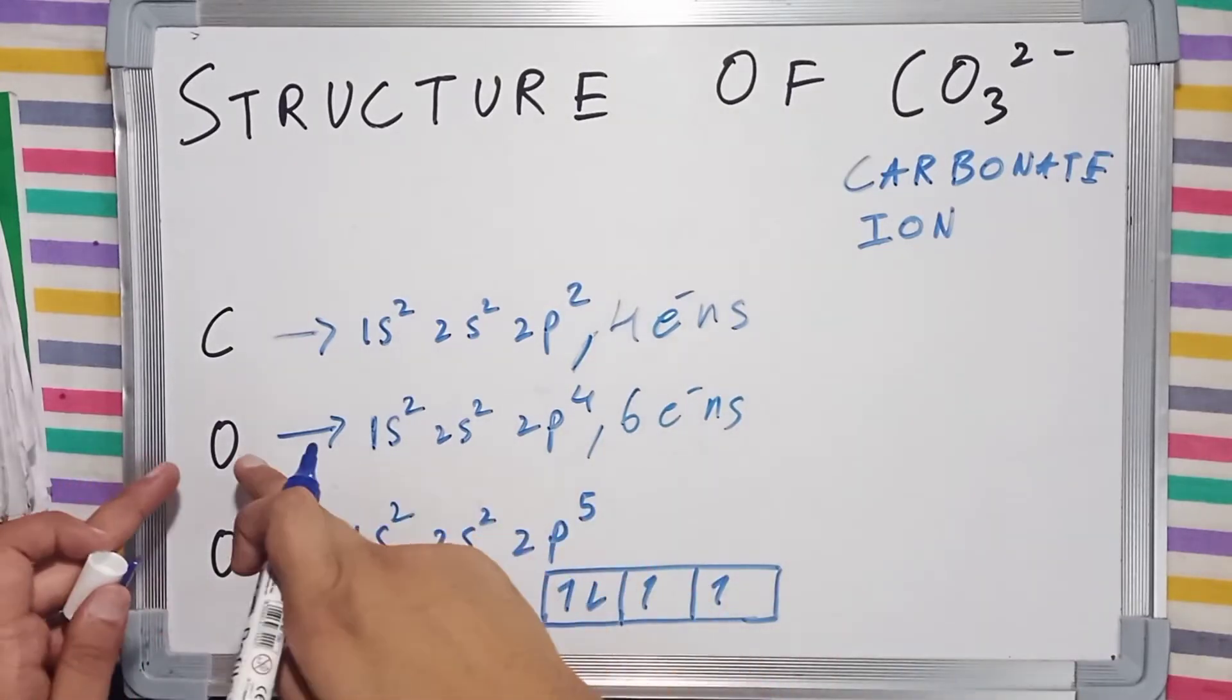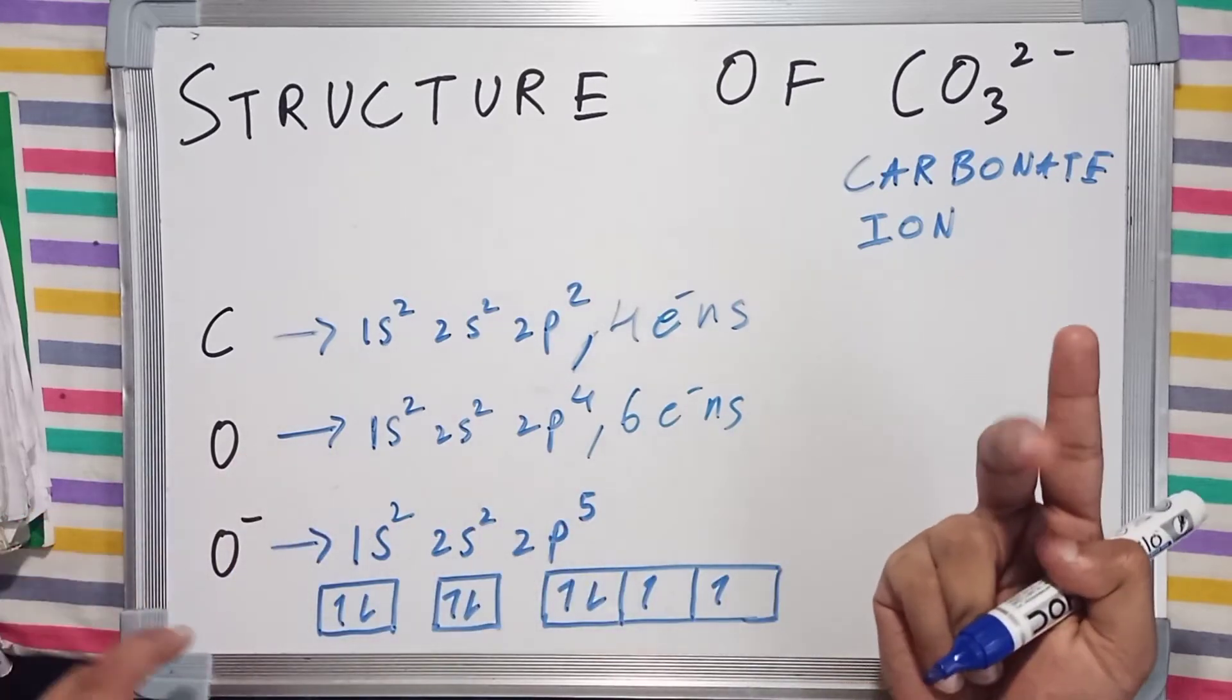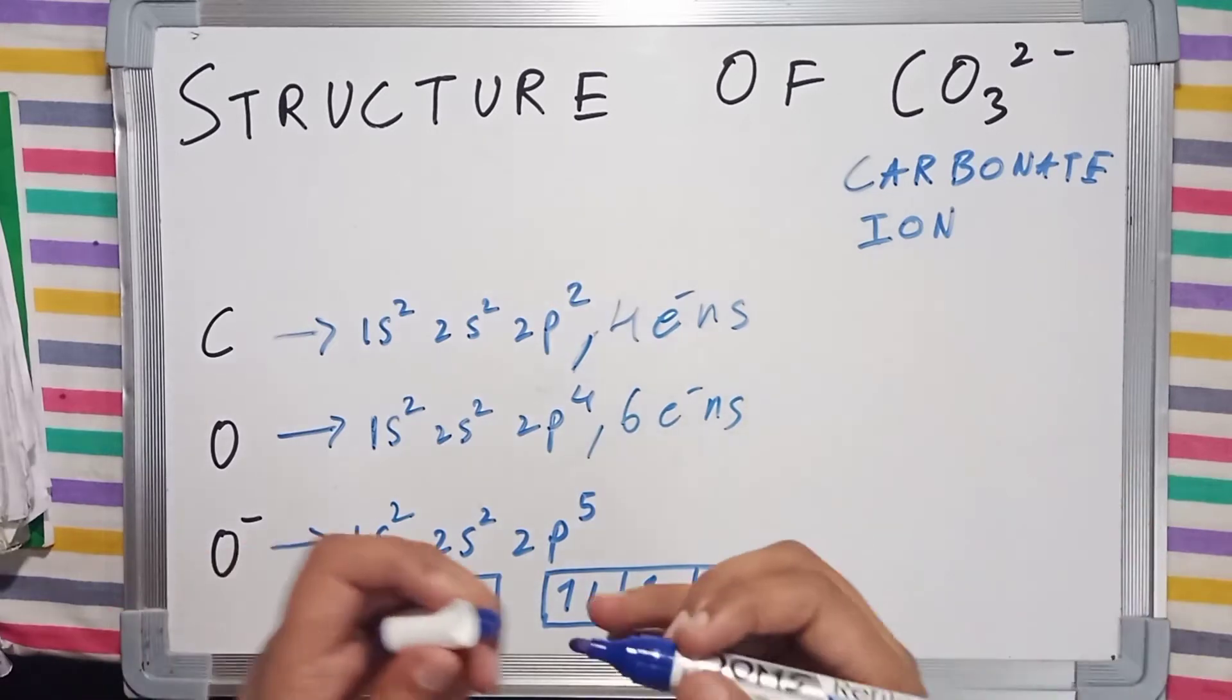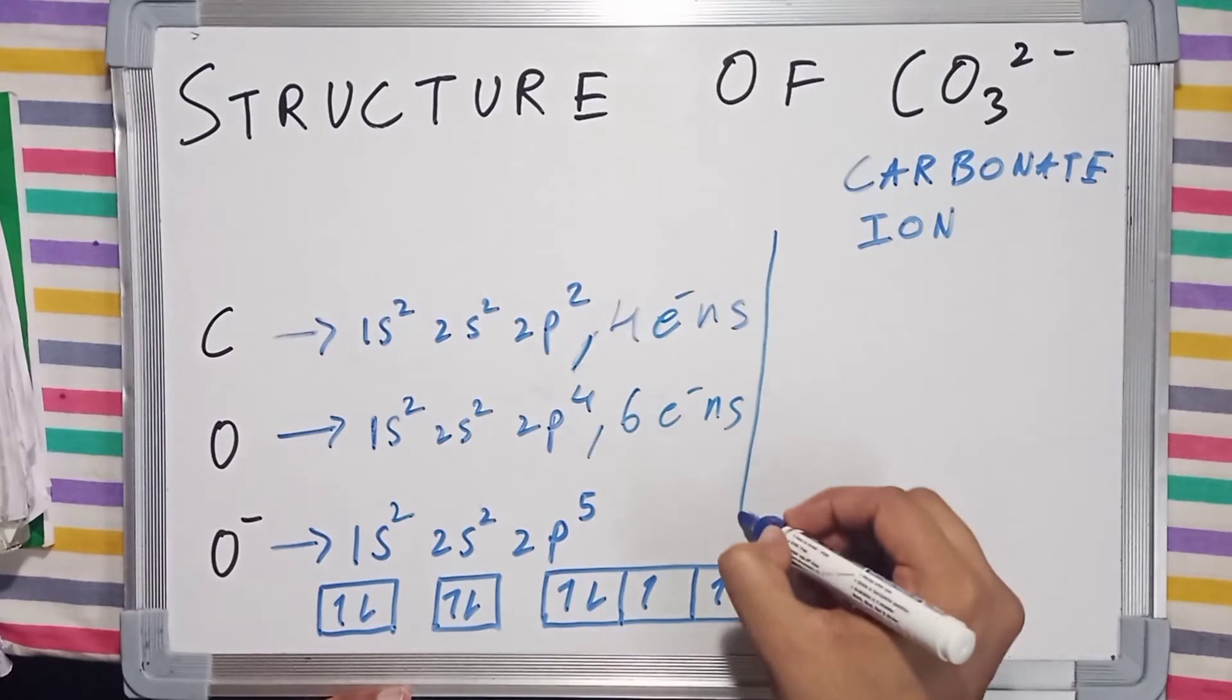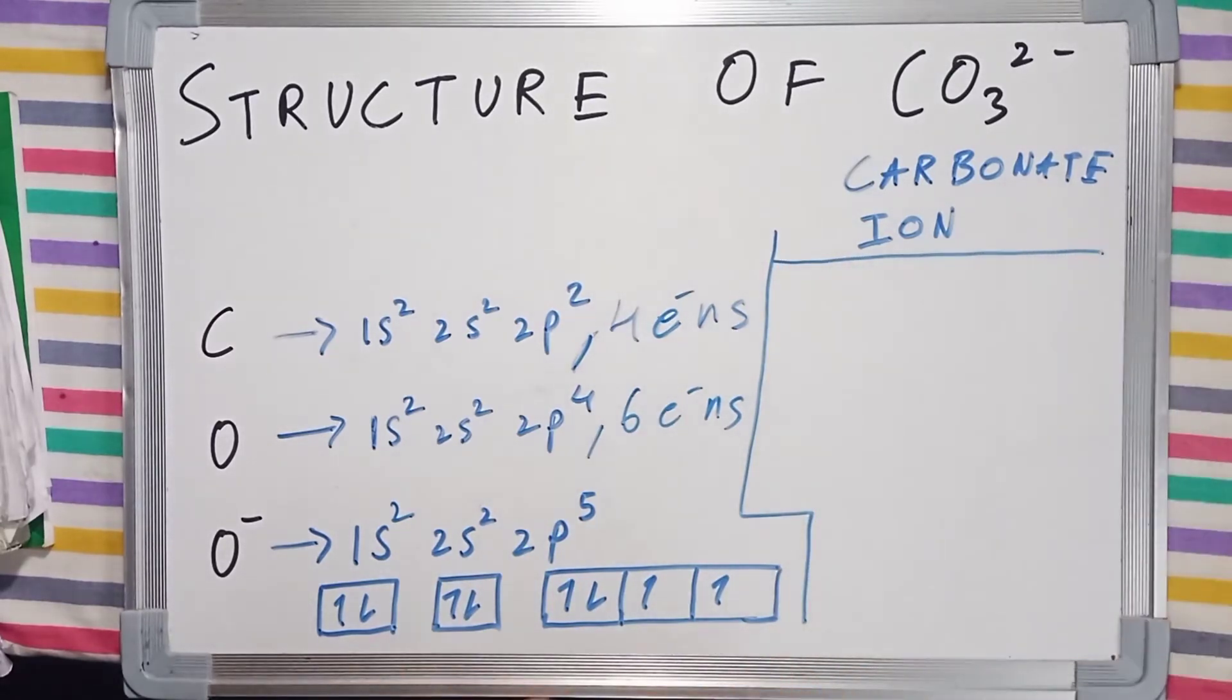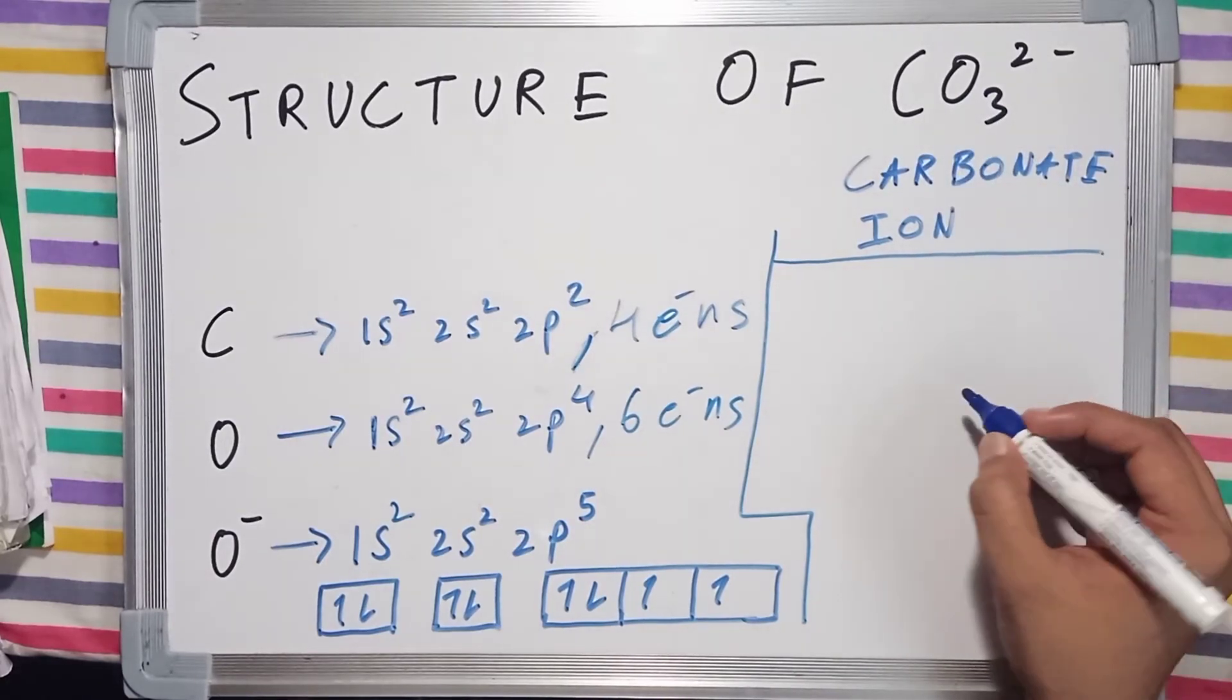So it's clear that oxygen will make 2 bonds, whereas O⁻ will make a single bond. Let's proceed to the structure. Our central atom is carbon, which has 4 valence electrons.